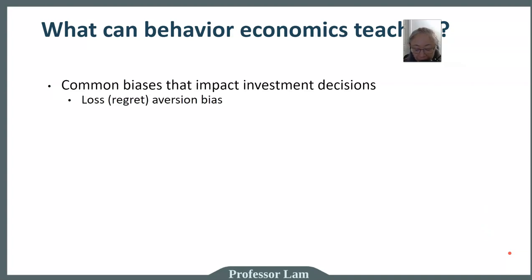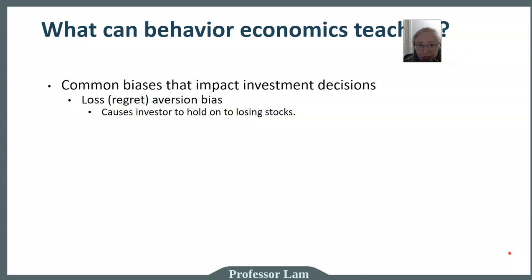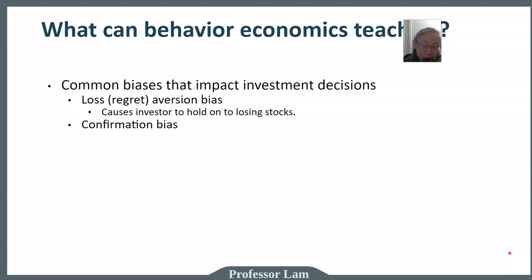One is regret or loss aversion bias, which may cause investors to hold on to stocks that are losing money, hoping for a rebound. An individual company can and does go bankrupt over time, unlike the stock market as a whole. Another is confirmation bias — hearing things that confirm what you already believe while ignoring contrary news. This can cause investors to ignore warning signs; for example, if inflation is increasing and likely to push interest rates up and lower stock prices, you may ignore those facts.